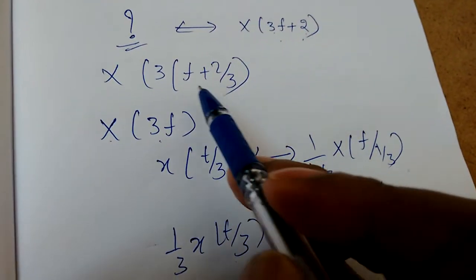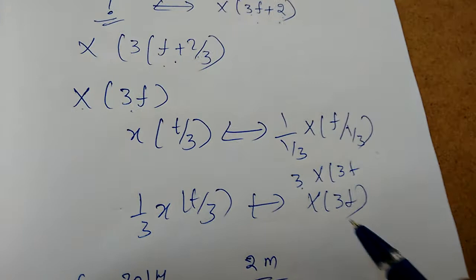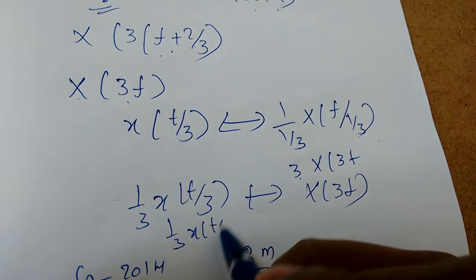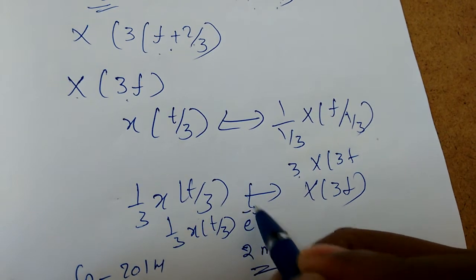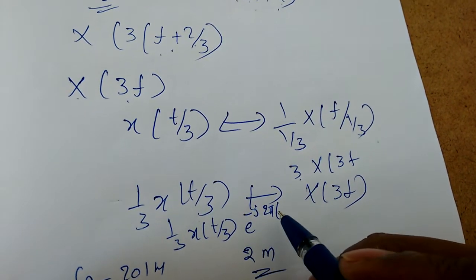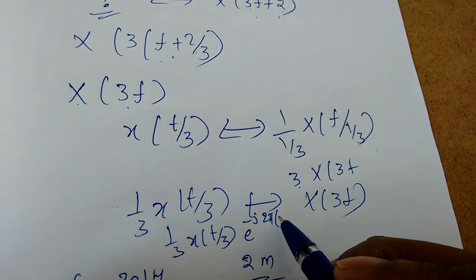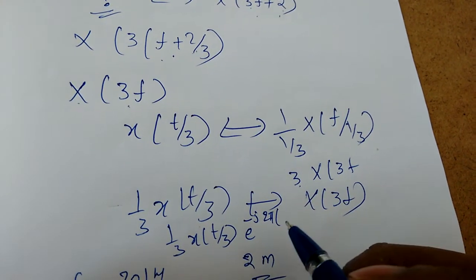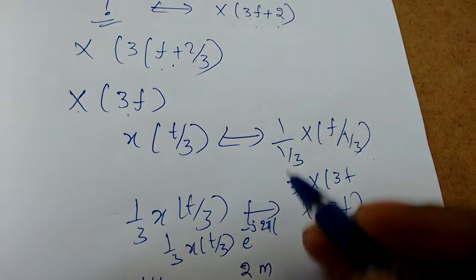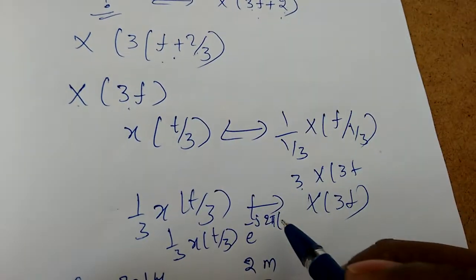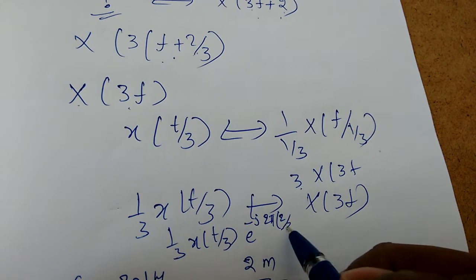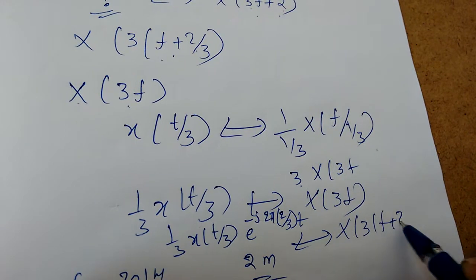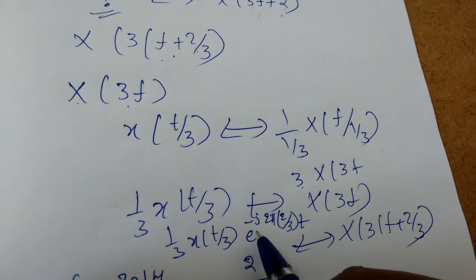To get X(3f + 2/3) we need to add the shifting. So: (1/3)·x(t/3) · e^(−j2π·f_naught·t), where f_naught is required to be 2/3. Placing t_naught = 2/3 gives X(3(f + 2/3)) = X(3f + 2). So the answer involves e^(−j2π·(2/3)·t) · (1/3)·x(t/3).